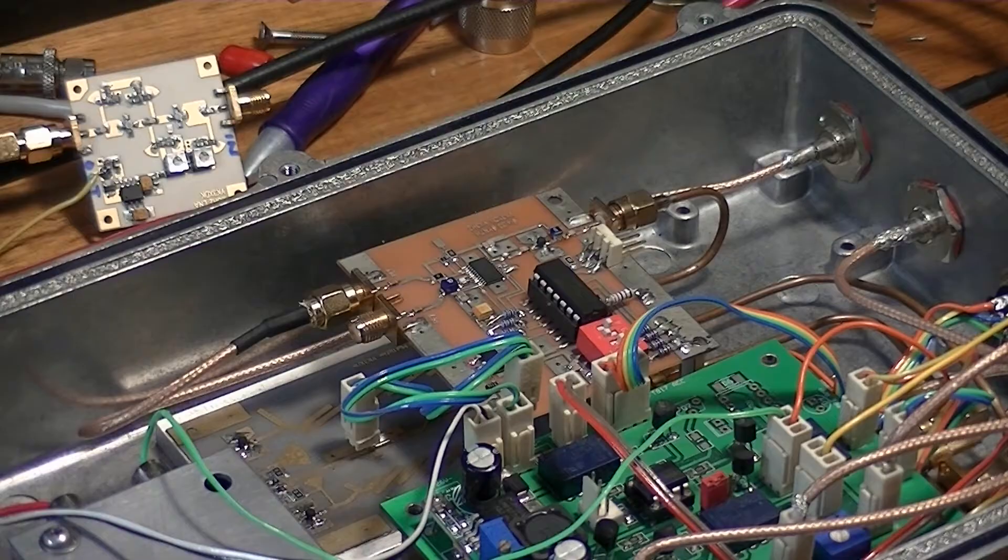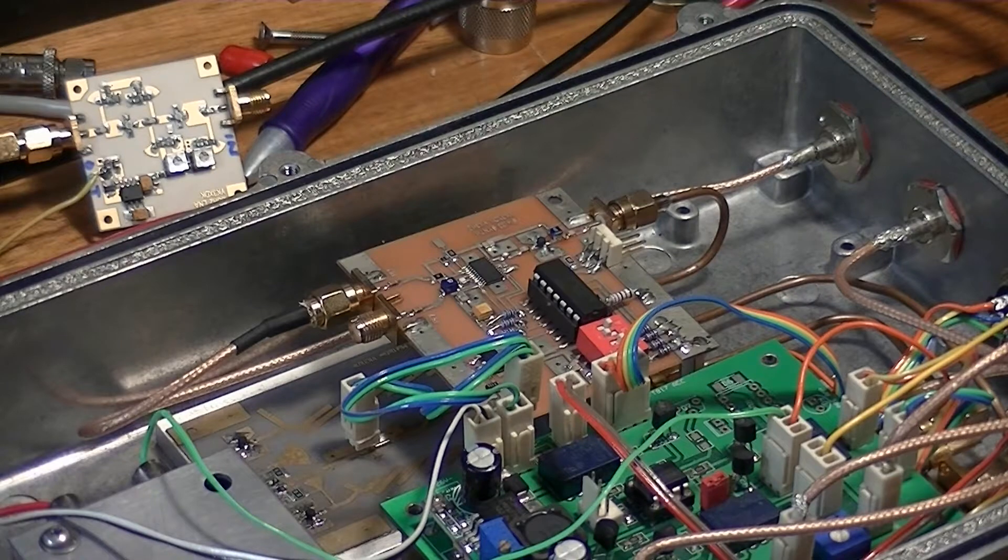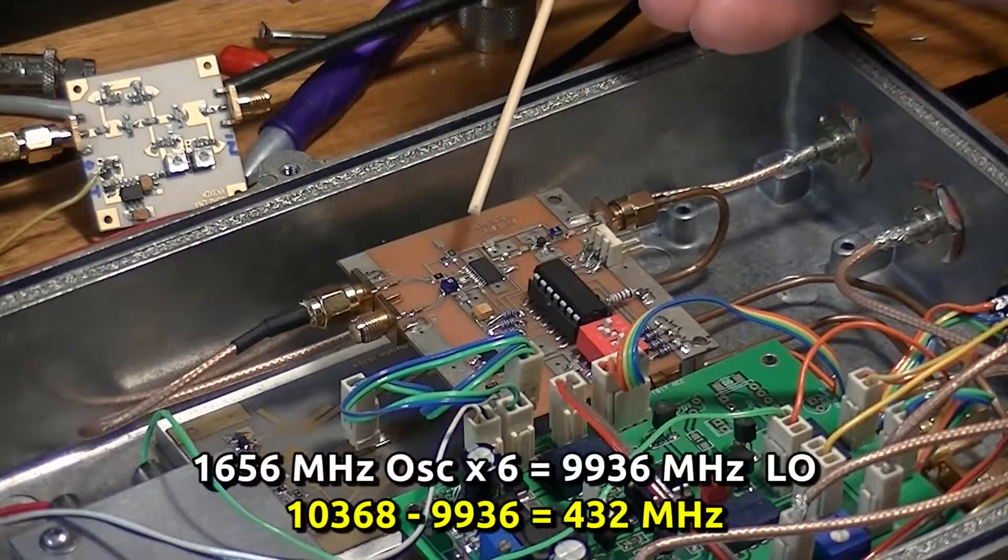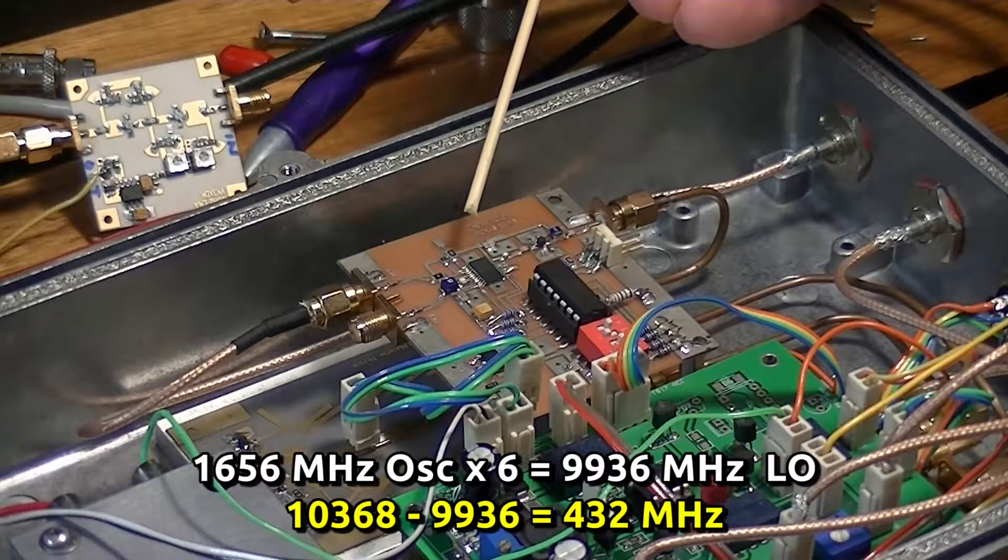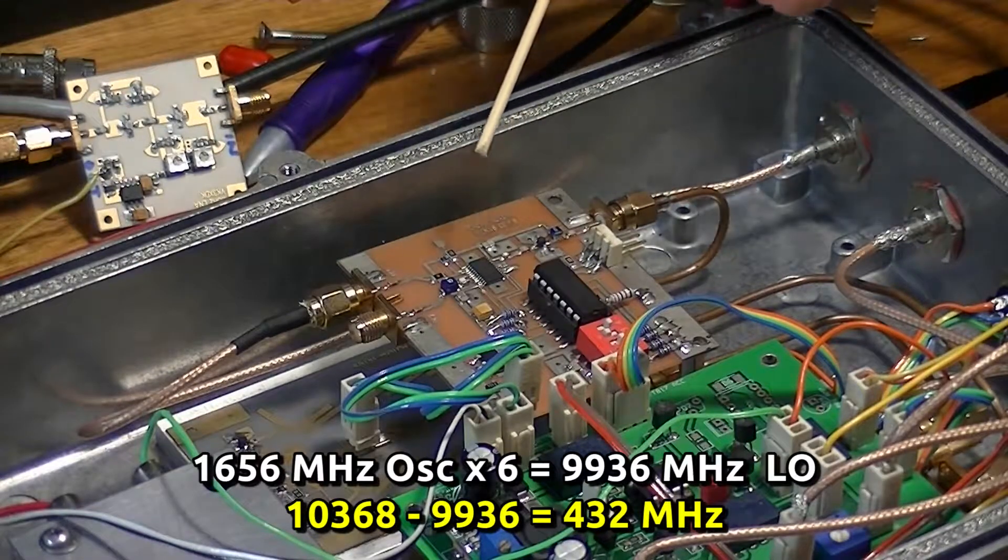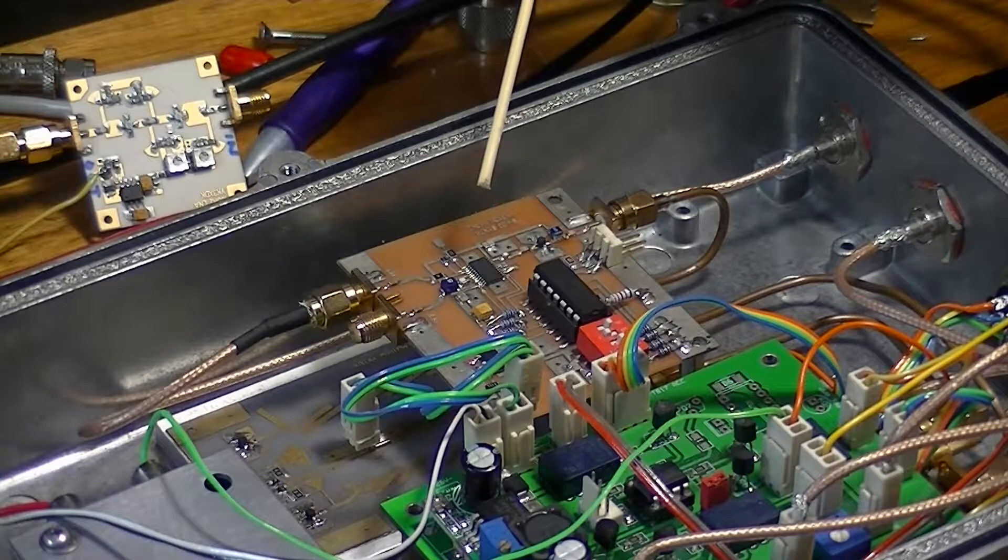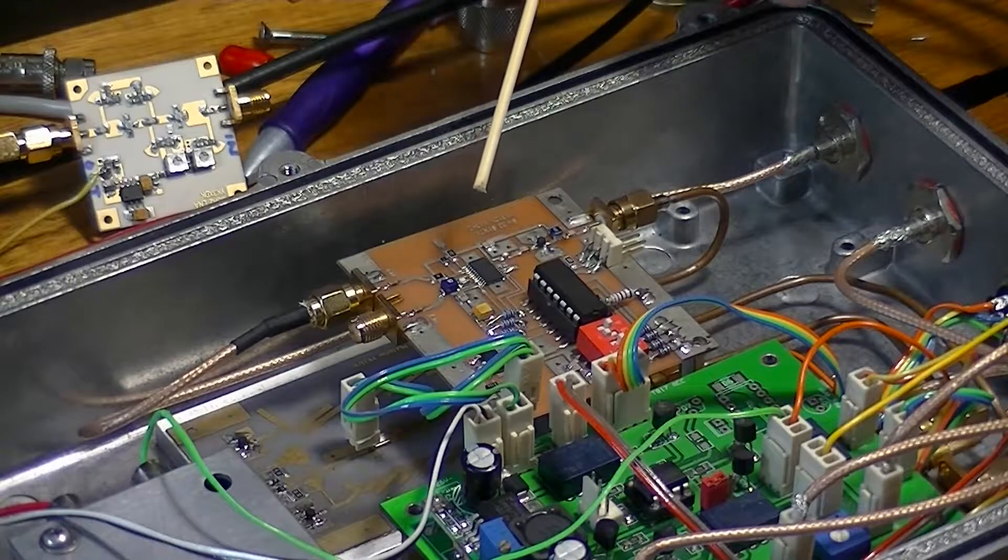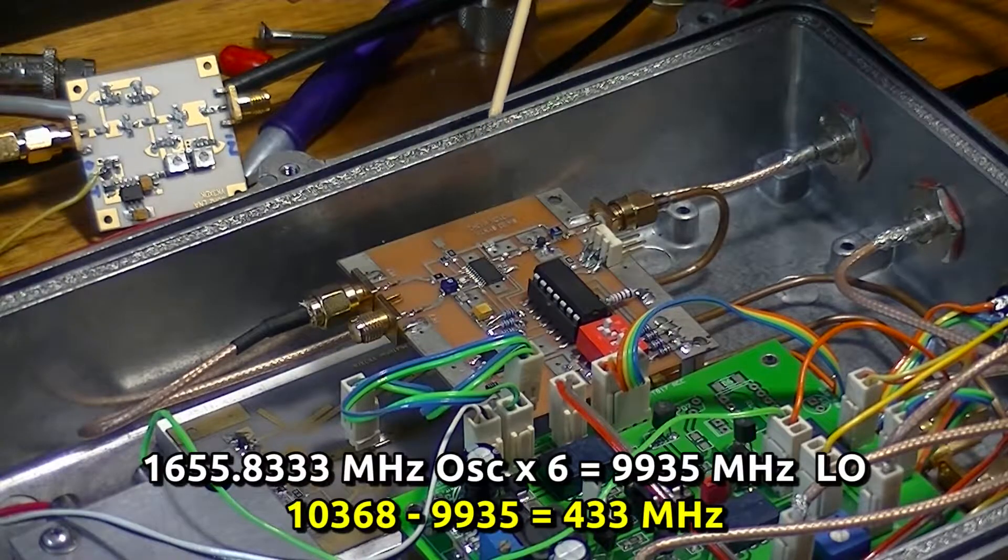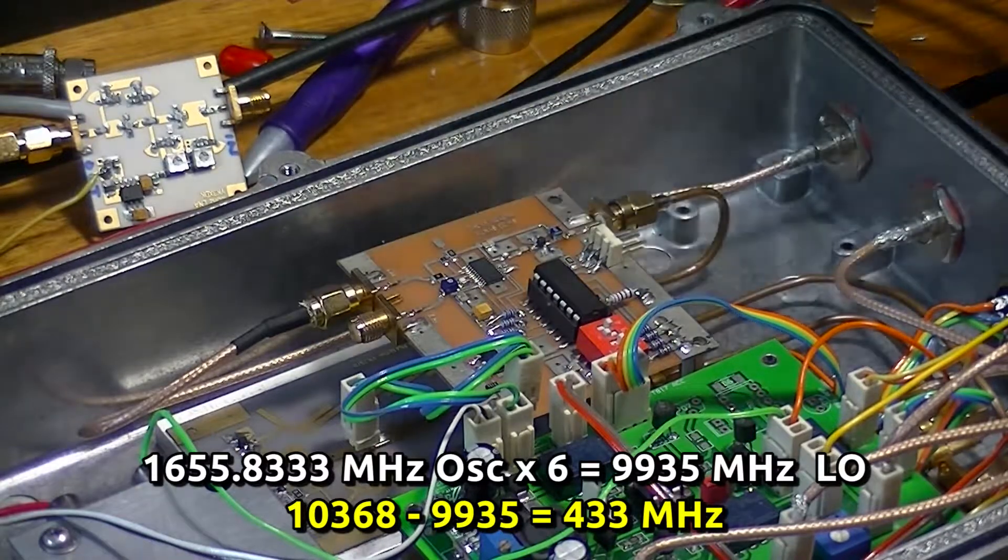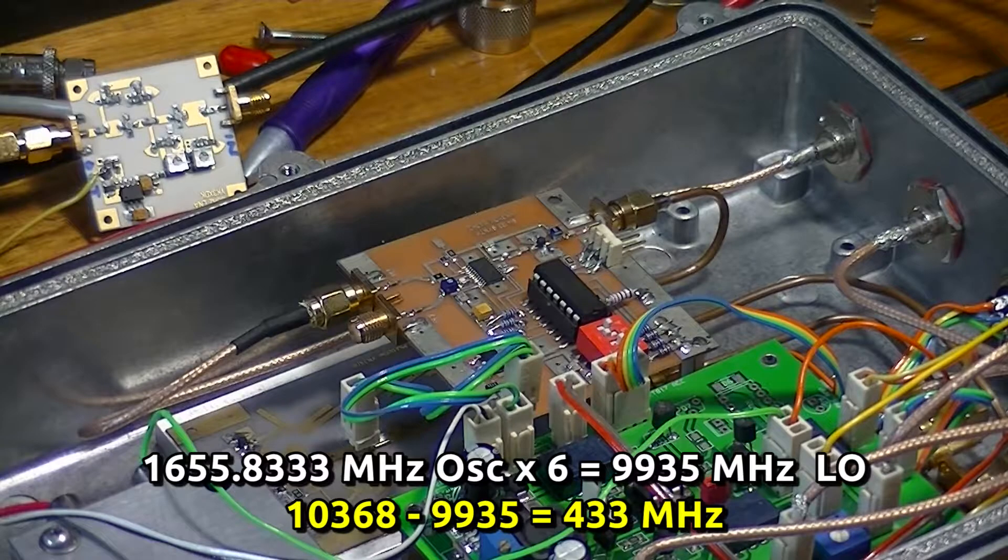Now to get the 433 IF, the standard XDK PLL board IC is only capable of generating even MHz, which is fine if you're using a 432 IF because the frequency it needs to generate is 1656 MHz. So what I've done here in this case, I've removed the G-type SI4133 and fitted a D, which is a lot more flexible with generating frequencies. So this is generating 1655.833 MHz, which gets ultimately multiplied to 9935 for our 433 IF.